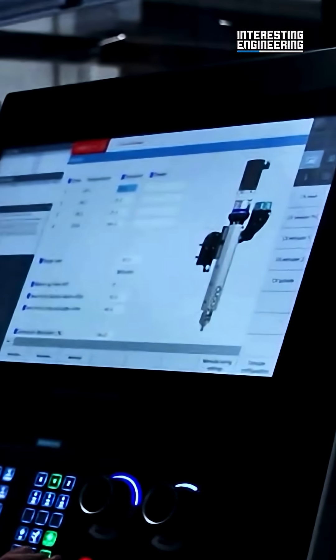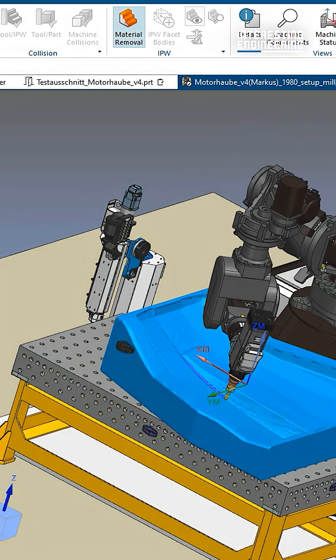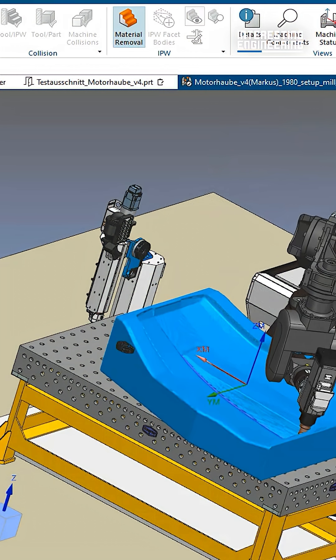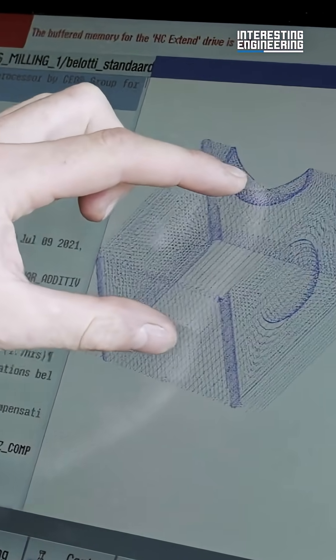Siemens' digital twin software, NX, is used to build a virtual model of the product. NX-CAM Robotics translates that model into additive and subtractive tool pathing.